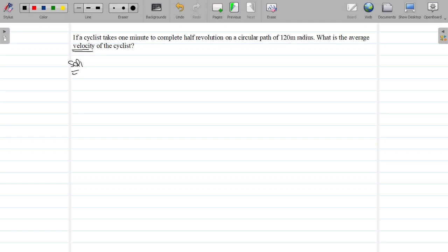We asked average velocity, so we will see the solution for it. Cyclist takes time is one minute. One minute means 60 seconds and complete half revolution. N is nothing but half, half revolution on a circular path of radius 120 meters.